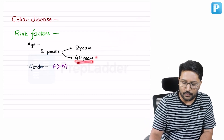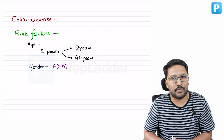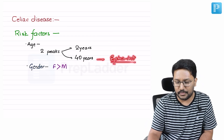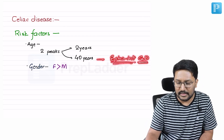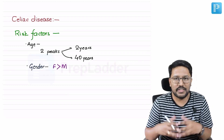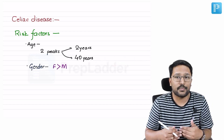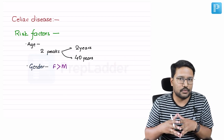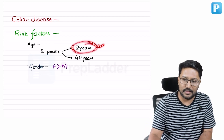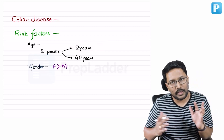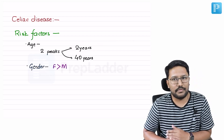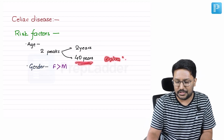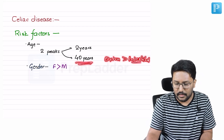The other peak we see is in adults around 40 years of age. These patients usually present with more extra-intestinal manifestations of celiac disease rather than intestinal ones. Classical celiac disease means someone presenting with intestinal manifestations — wheat gluten allergy presenting with diarrhea and abdominal pain. Classical is more likely in the pediatric age group, while adults are more likely to present with the non-classical variant.